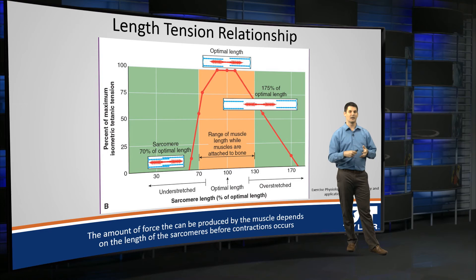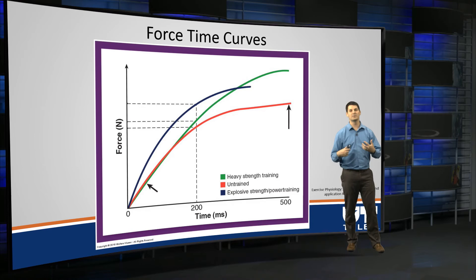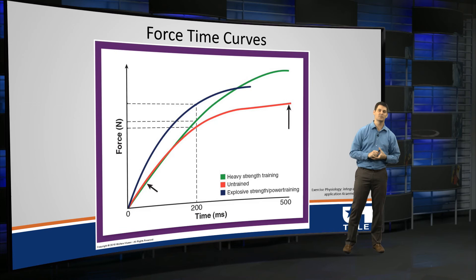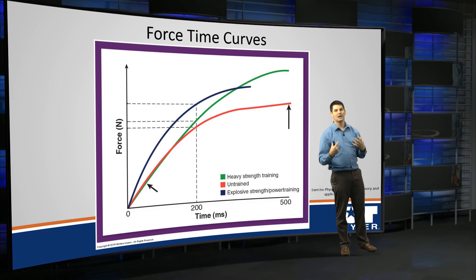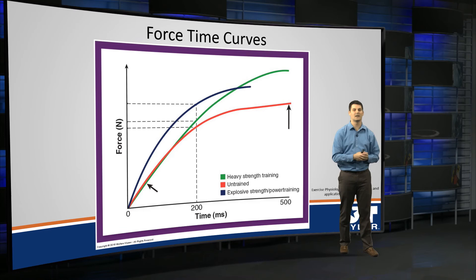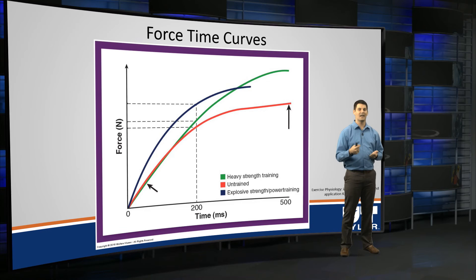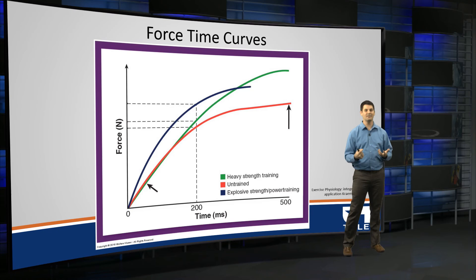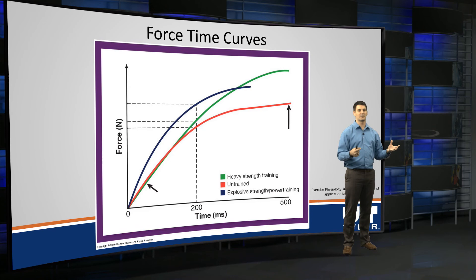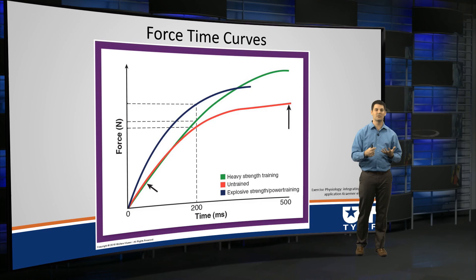The last thing we'll look at is how fast we can produce force and the time it takes to generate it. We've now looked at the length-tension relationship and the force-velocity curves, and we're looking at how this comes into applied exercise physiology training. The untrained is in the red line, heavy strength training in the green, and explosive or power training in blue. If you strength train only — the green line — you actually don't really generate force any faster. The red and green lines overlap to about 200 milliseconds, meaning you're not generating movements very fast — instead, you're just able to generate more force.